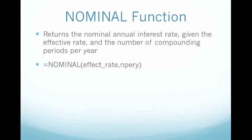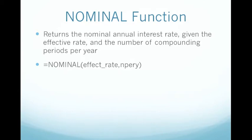Now to break down the function. The effective rate is the effective interest rate that is given to you. And number per year is the number of compounding periods per year, which you are also given.